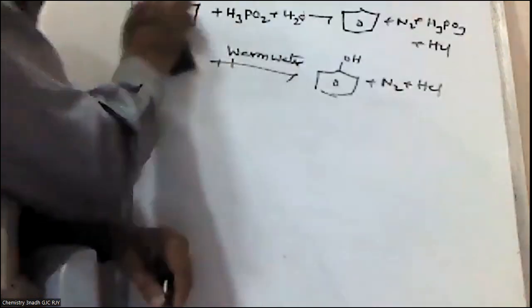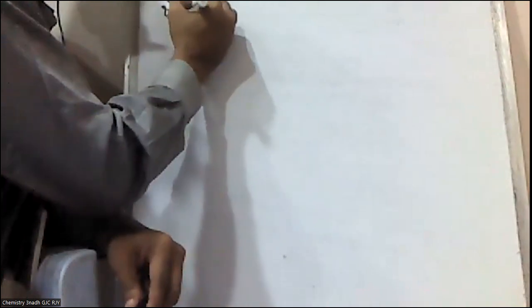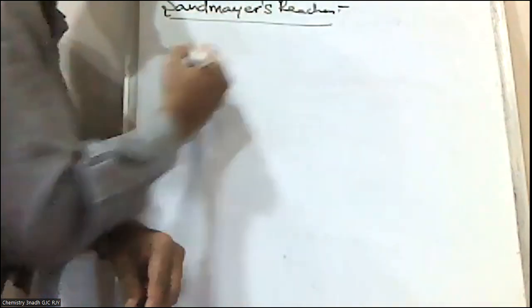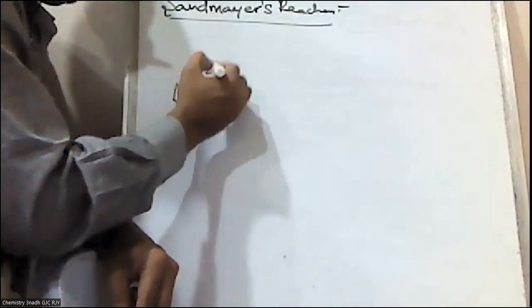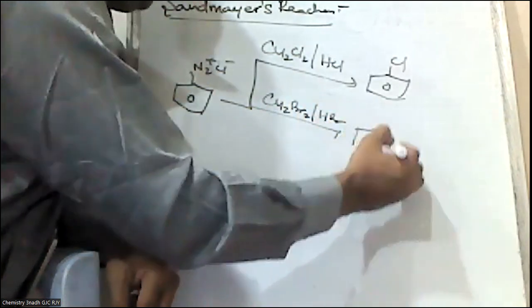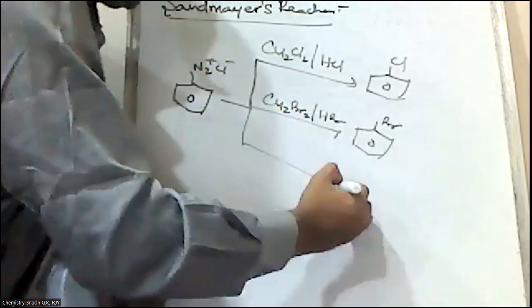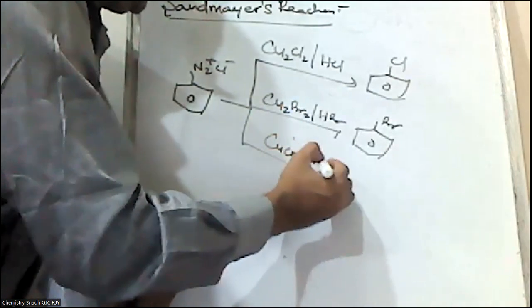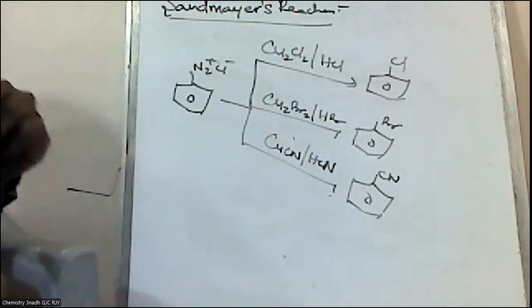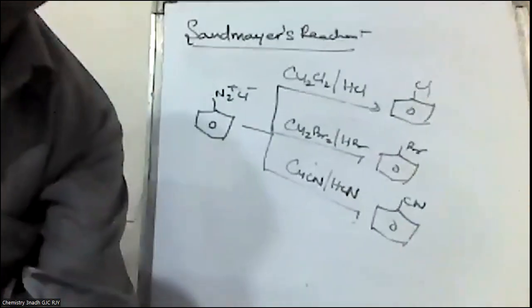The third one is Sandmeyer's reaction. When benzene diazonium chloride is treated with cuprous chloride/HCl, chlorobenzene is formed. With cuprous bromide/HCl, bromobenzene is formed. And with cuprous cyanide/HCl, cyanobenzene is formed. This reaction — giving chlorobenzene, bromobenzene, and cyanobenzene respectively — is called Sandmeyer's reaction.